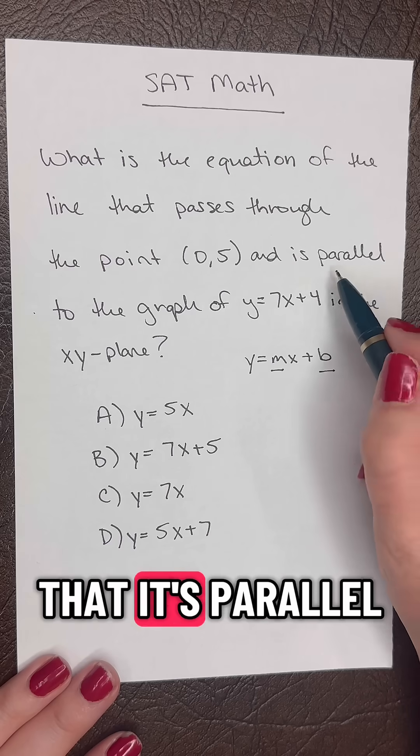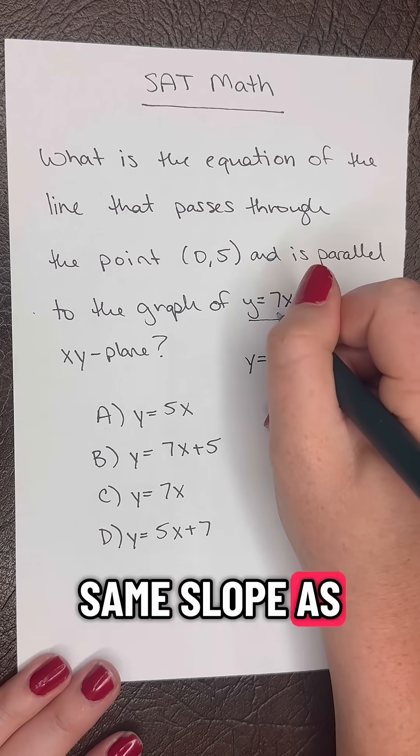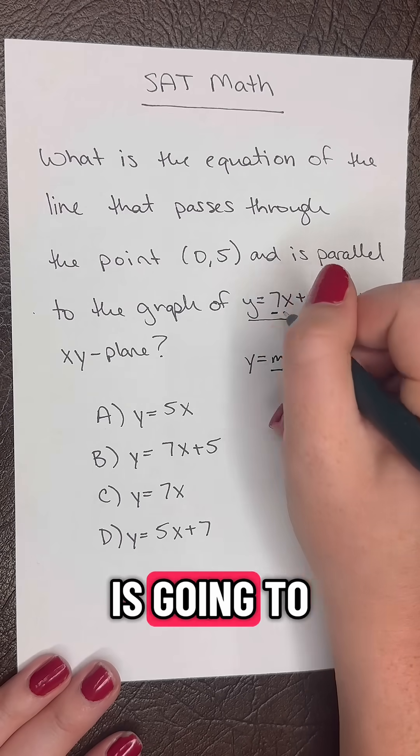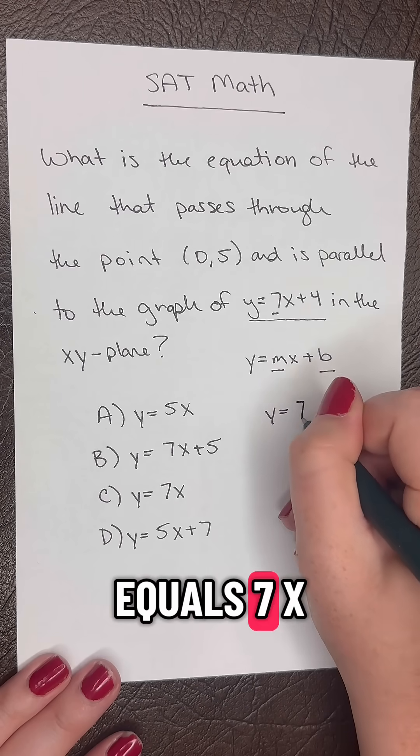We know that it's parallel to this line, so that means it has the same slope. The slope is going to be 7, so so far we have y = 7x.